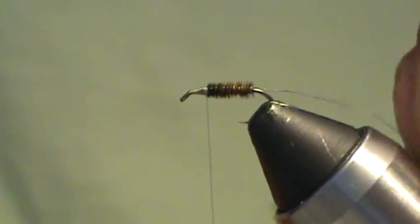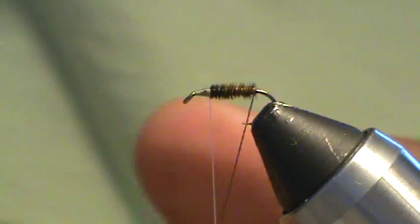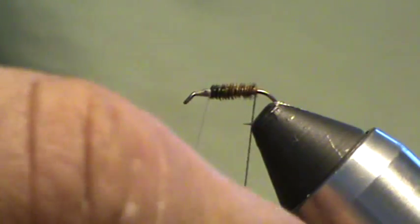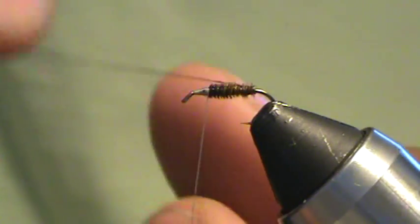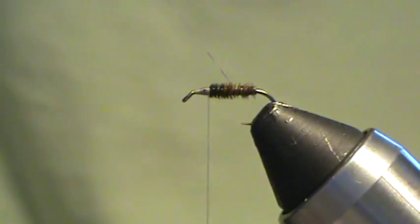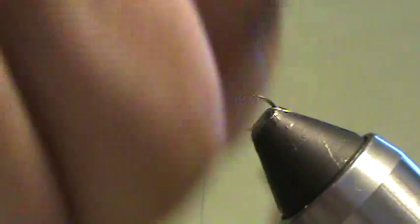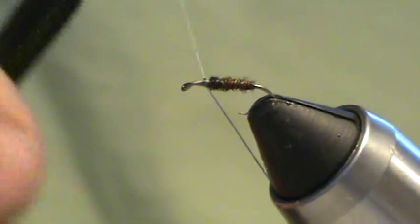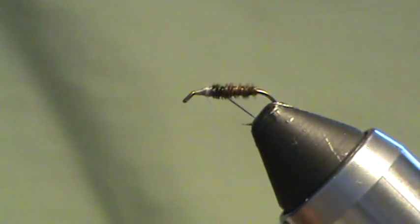I'm going to go ahead and counter-wrap the Uni thread. I'm going to twist and cord it up as I go along. You can't even necessarily see it that well, but it's going to reinforce the fly and make it last a little bit longer since pheasant tail is fairly brittle.